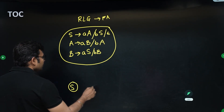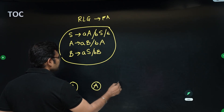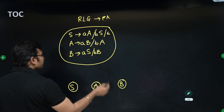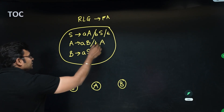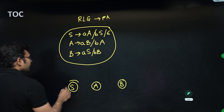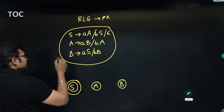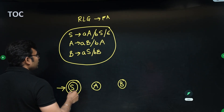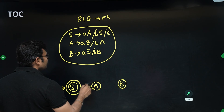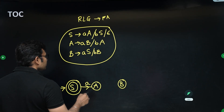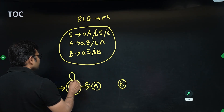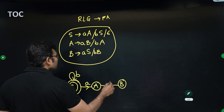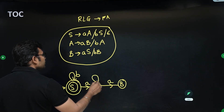So what are the states? S is a state, A is a state, B is a state — all the variables become states. S goes to epsilon, therefore S will be a final state. S is the starting symbol so S is the starting state. S on small a goes to A, S on small b goes to S, A on small a goes to B, and A on small b goes to A.